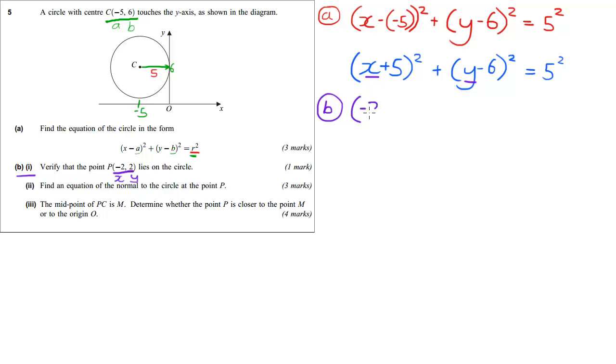We have minus 2 plus 5 squared, plus 2 minus 6 squared, should equal 25. So we have 3 squared plus minus 4 squared which equals 25. Then we have 9 plus 16 which equals 25. So because 9 plus 16 equals 25,